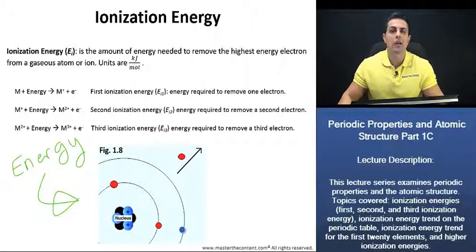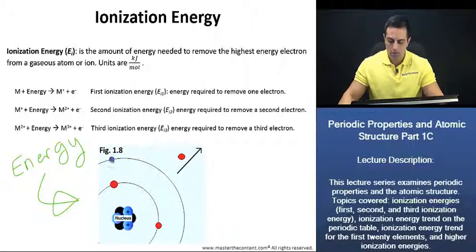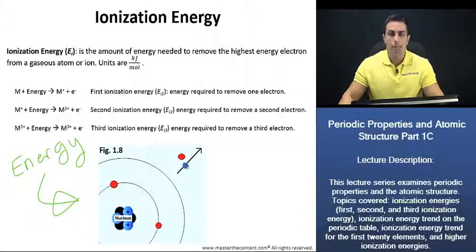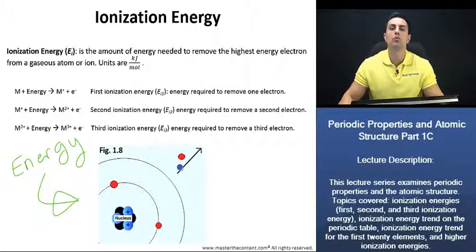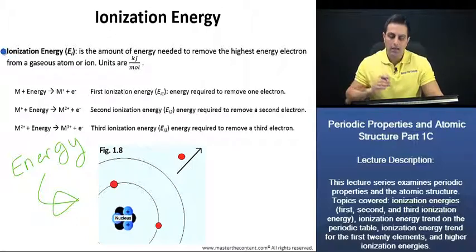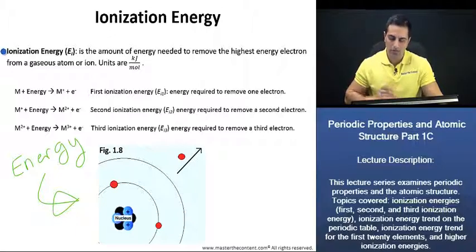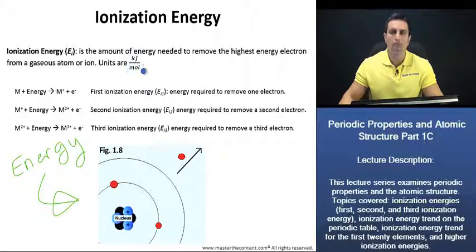If that electron gains enough energy, it can actually be removed from the atom. And once that electron is removed from the atom, we're left with an ion, because it has lost an electron. The amount of energy that it took to remove this electron is what is known as the ionization energy. The ionization energy is the amount of energy needed to remove the highest energy electron from a gaseous atom or ion, and the units are kilojoules per mole.